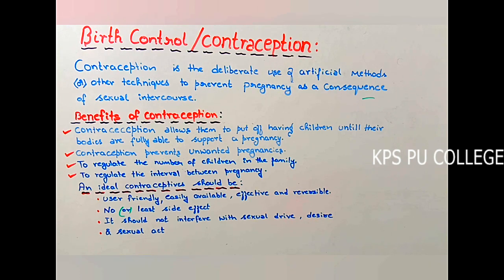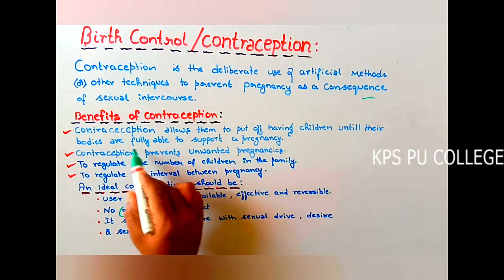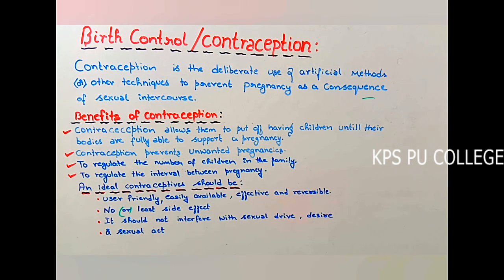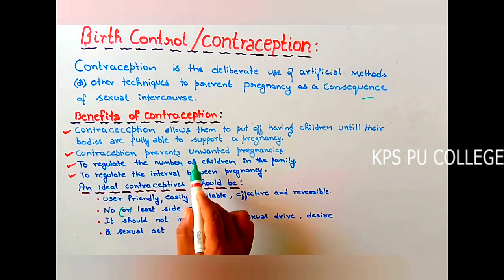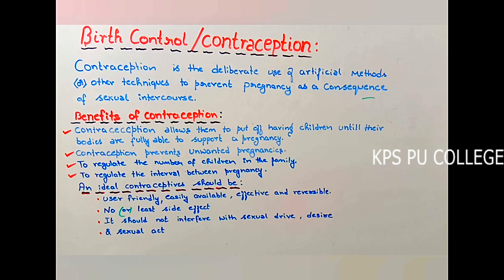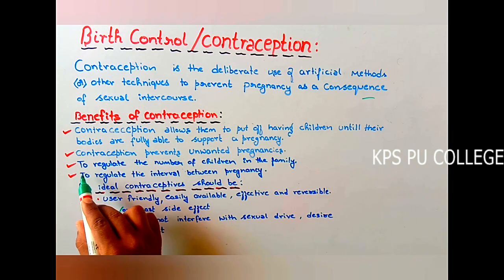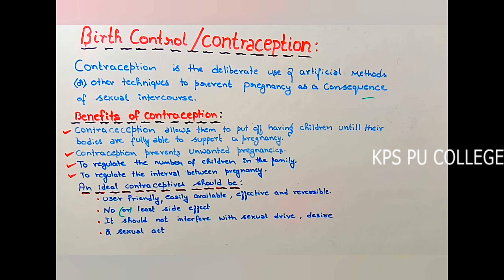Let us learn the benefits of contraception. Some of the benefits are: contraception allows people to put off having children until their body is fully able to support pregnancy. Next benefit is contraception prevents unwanted pregnancy. Next benefit is to regulate the number of children in the family. The next benefit is to regulate the interval between pregnancies, or to give spacing between children.